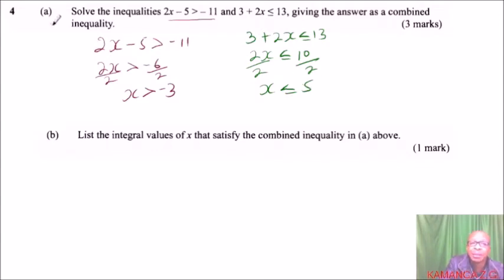Now, with that, we can combine. To combine, you start by writing x in the middle. So, from the first one, x is greater than minus 3. So, you put x is greater than minus 3. Then, the second one, x is less than or equals to 5. And, that's how you do that. So, that is a combined inequality of this.